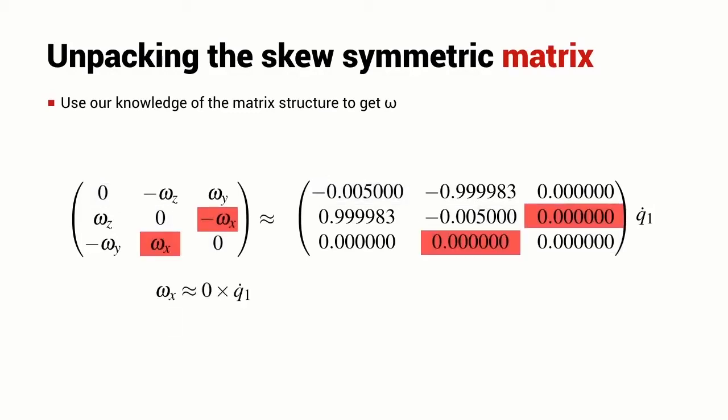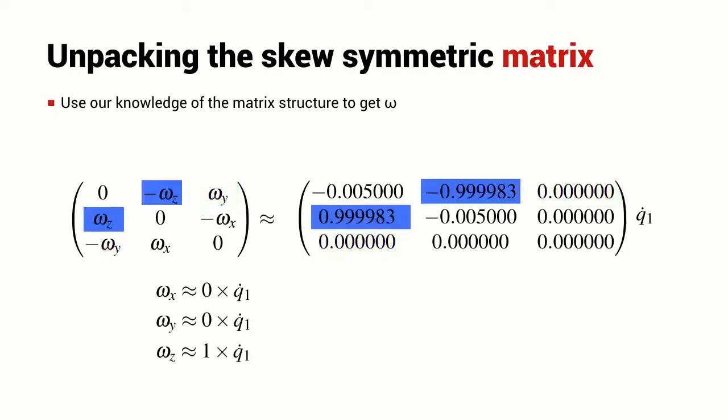Let's look at the elements that correspond to omega x. In this case, they are both zero. So we could write that omega x is approximately equal to zero times Q1 dot. Let's look at the omega y elements and they are both identically equal to zero. So I'm happy to say that omega y is approximately equal to zero times Q1 dot. Let's look now at omega z and this is pretty consistent with omega z being approximately equal to one times Q1 dot.